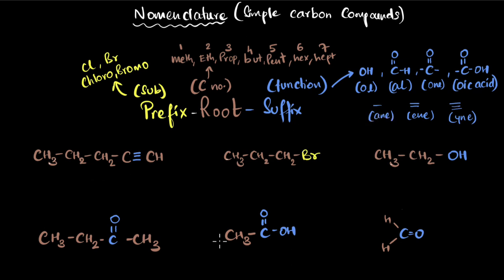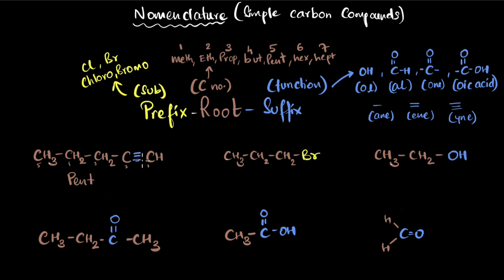Let's apply this and start naming. For this first example, I don't see any substituent groups — no chlorine, bromine, or iodine — so there is no prefix. I count the carbon atoms: one, two, three, four, and five — so five carbons gives 'pent.' I have a triple bond, so I end with 'yne,' not 'ane.' This compound is pentyne — an alkyne.